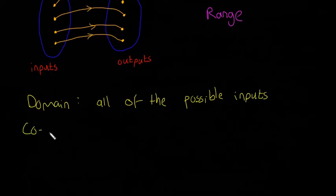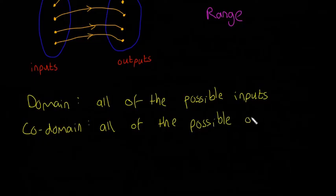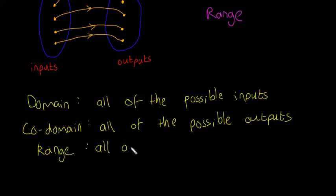The co-domain, that's all of the possible outputs. So all of the possible outputs. And then lastly, the range. The range is going to be all of the actual outputs. So there's a slight difference between the co-domain and the range. All of the actual outputs.